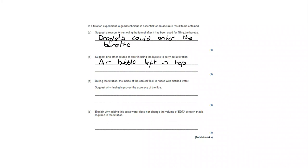For part C, during the titration, the inside of the conical flask is rinsed with distilled water. Why does this improve the accuracy of the titer? Well, you will know that as you pour things into a conical flask, there will be droplets that will settle on the side of the flask and not drip down to the bottom. The water will ensure that all of the unreacted reagent is sent to the bottom of the flask, so it won't be left unreacted on the side.